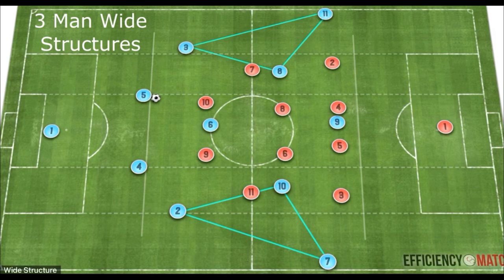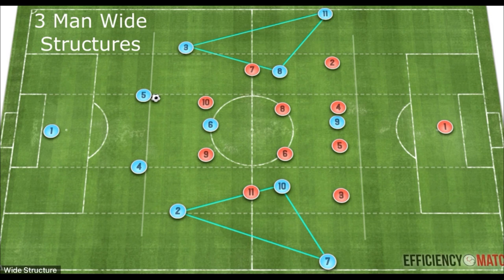The three-man wide structure is made up of the fullback, the attacking central midfielder on either side, and the winger. From here we create a base with the fullbacks providing width, the wingers creating width, and the inside attacking midfielders serving as the source of progression.